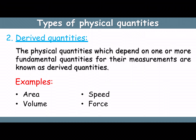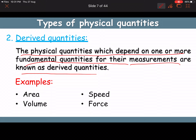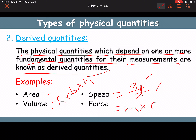Derived quantities: a physical quantity which depends on one or more fundamental quantities for its measurement is known as a derived quantity. Examples are area, volume (L × B × H), speed (distance divided by time), and force (mass × acceleration). Acceleration is also a derived quantity because it depends on speed and time.